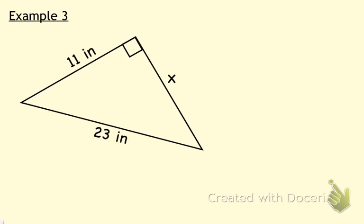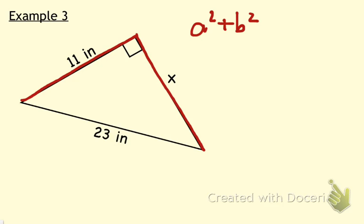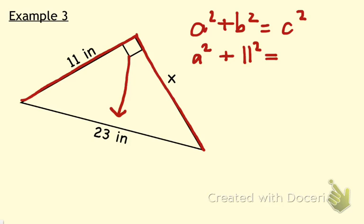Let's take a look at one last example. Please trace this diagram into your notes. We are finding a leg — we can tell that because our two legs are the two sides that come together to form the right angle. Let's start with our formula: A squared plus B squared is equal to C squared. Since one of our legs is the missing dimension, I'm going to leave A squared as A squared, plus 11 squared, equal to C squared. Our longest side is always the one across from the right angle, so we'll fill in 23 squared in place of C squared.